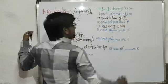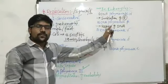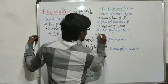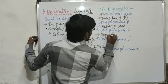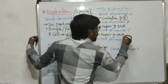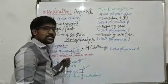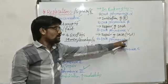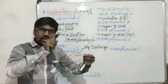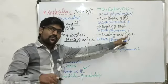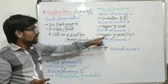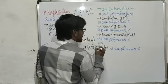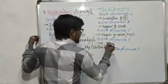DNA polymerase beta's work is repairing of DNA — after the formation of new DNA strand it helps in repairing and proofreading. DNA polymerase gamma's work is again repair of DNA, but specifically of mitochondrial DNA. The mitochondria is an autonomous cell organelle having its own circular DNA. That mitochondrial DNA also replicates, and any faults in it are repaired by DNA polymerase gamma.